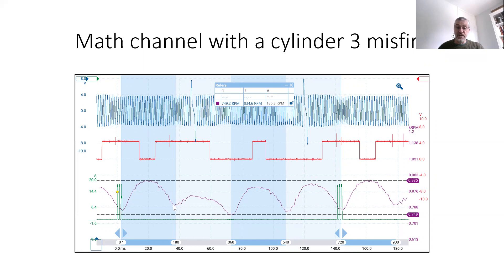But as cylinder three fires, you can see hardly any increase in engine RPM, confirming that the power output from cylinder three is not there. But then with cylinder four and cylinder two fires, you can see the engine speed is then slowly increasing each time, confirming that the power output from each of the other cylinders is equal.